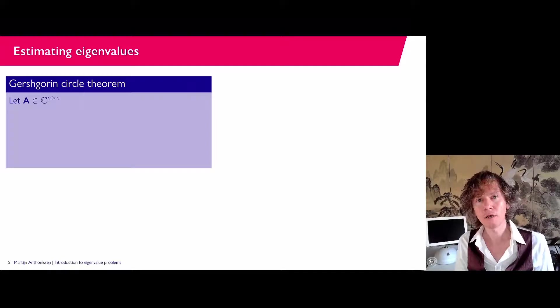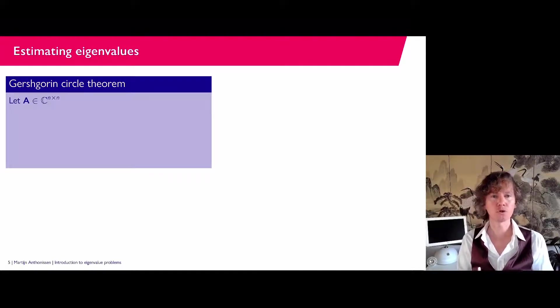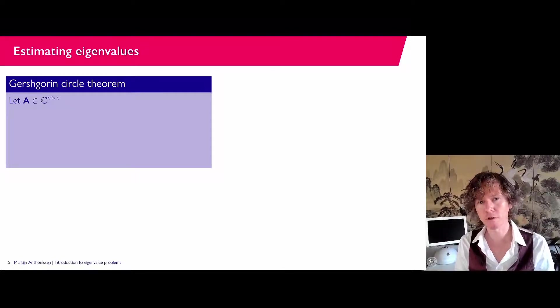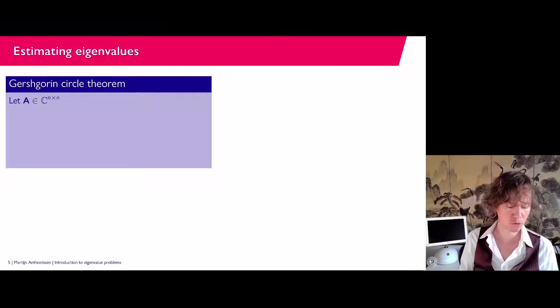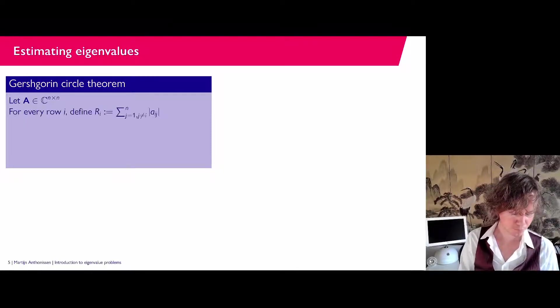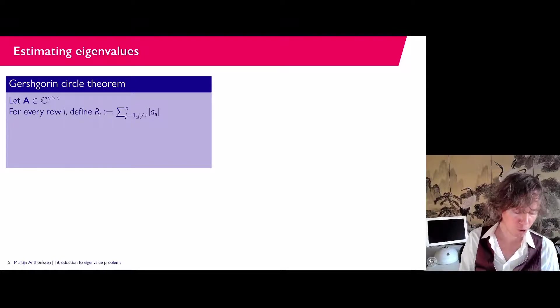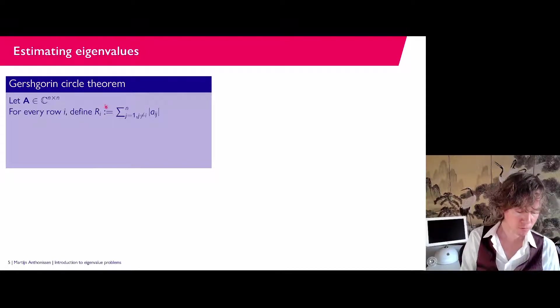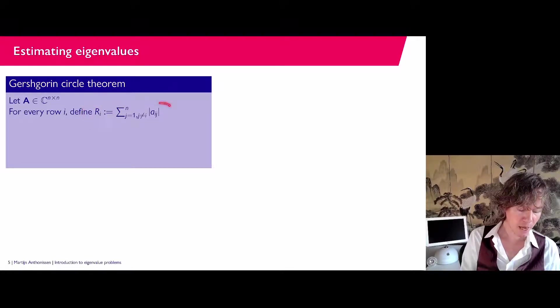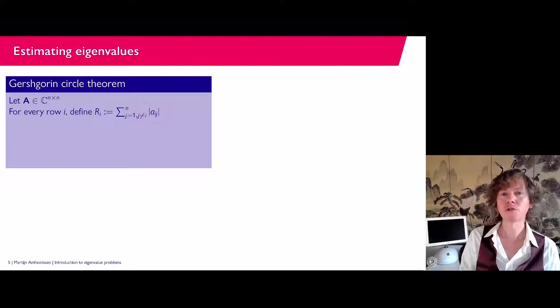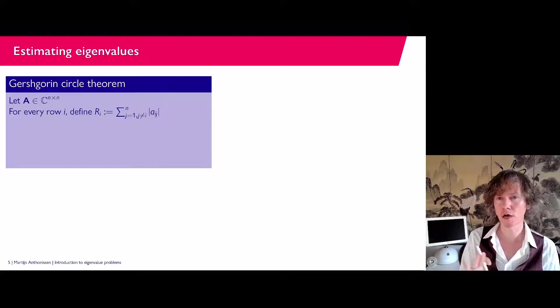The idea here is to try and locate the eigenvalues in the complex plane. So let's assume here more generally that we have a complex matrix. So A is a complex n times n matrix. For every row, I'm going to define r_i, which is the sum of the absolute value of the matrix entries. But we sum over the off-diagonal entries. So here you see that j should be unequal to i. So the diagonal entry is not included.